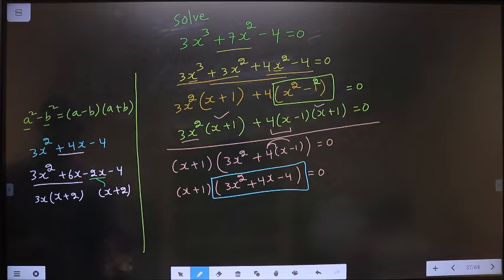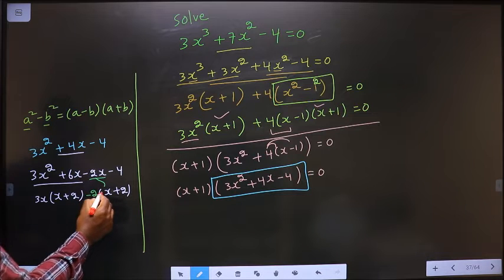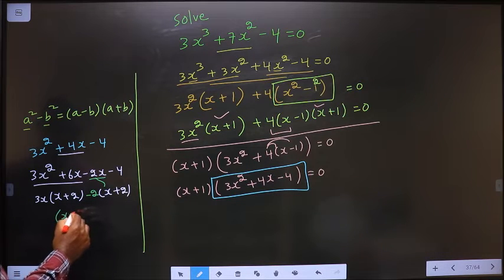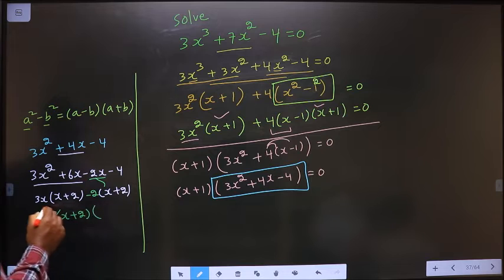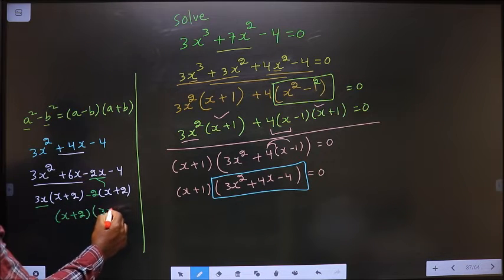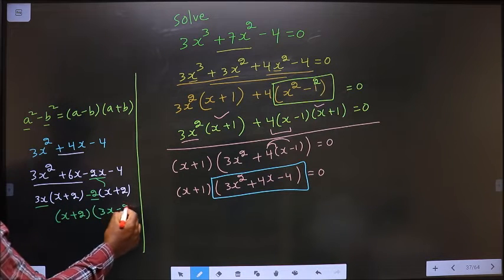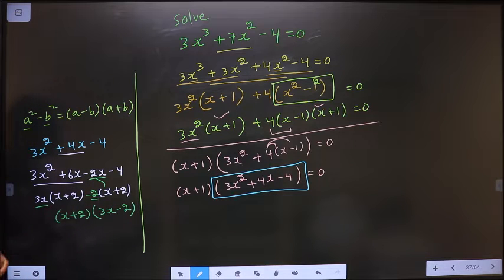From this, x has gone inside. So outside is minus 2. So now take out x + 2 common. Here I get 3x and here I get minus 2.